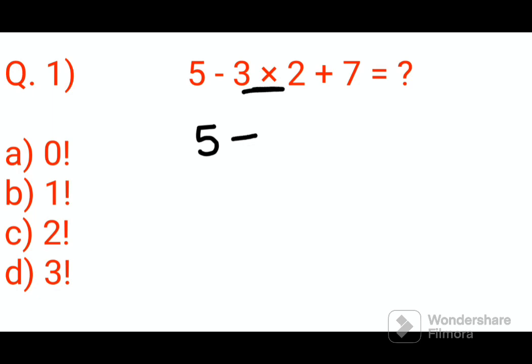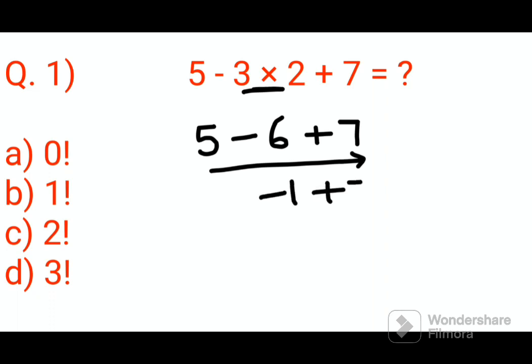So we write 5 minus 3 into 2, which gets you 6, plus 7. Now, minus and plus hold the same ranking, so we go left to right: 5 minus 6 gets you minus 1, plus 7.